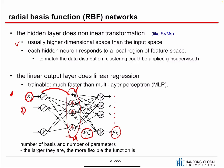To match the data distribution, clustering can be applied — you can use clustering to place basis functions where there are lots of data samples, but it's not necessary. The linear output layer does linear regression: the hidden layer takes care of the nonlinear transformation, and then the output layer is just a linear regression, and this part is trainable.